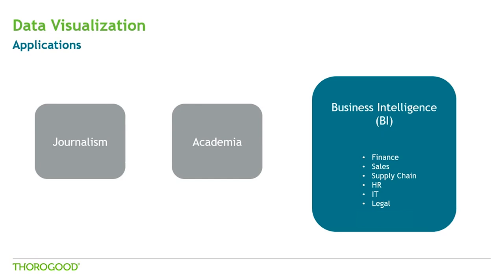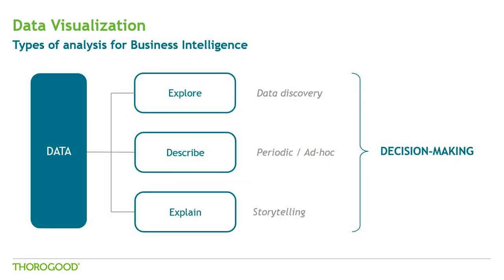There are quite a few different groups of users each with different needs, so overall it's a very dynamic environment. In journalism and academia the visualizations are usually formatted to be presented only once, but in BI your numbers keep changing all the time, so you have to make sure your charts behave well when new data comes in. It's important to know that within a company there are three basic types of analysis that a report or a dashboard can help you with.